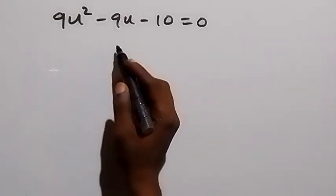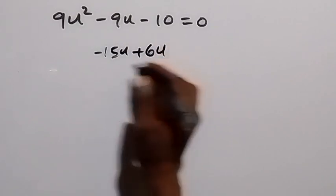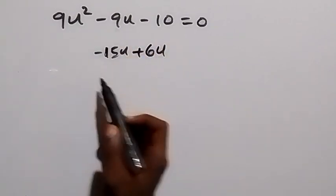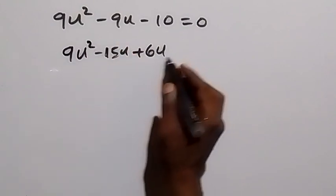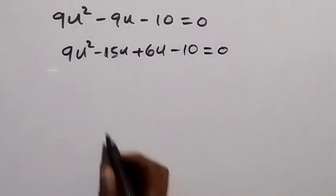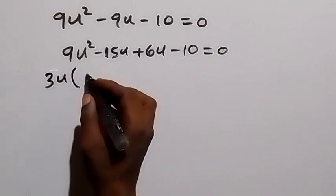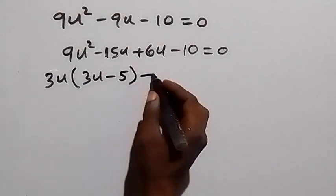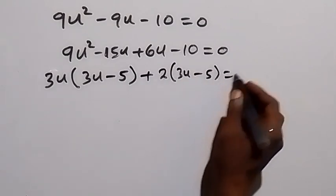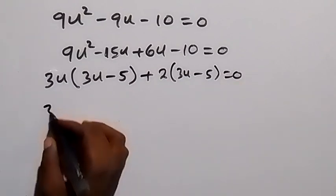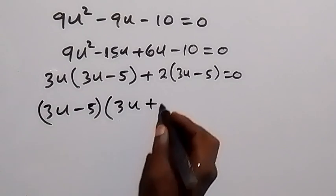We factor this quadratic. We split -9u into -15u + 6u (since -15 × 6 = -90 and -15+6 = -9). So: 9u² - 15u + 6u - 10 = 0. Grouping in pairs: 3u(3u - 5) + 2(3u - 5) = 0. Factoring out (3u-5): (3u - 5)(3u + 2) = 0.